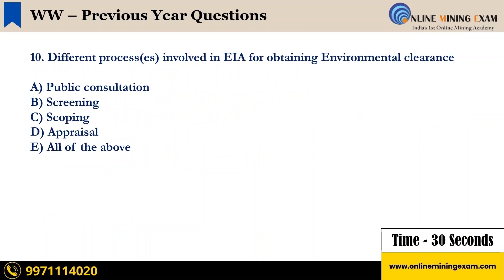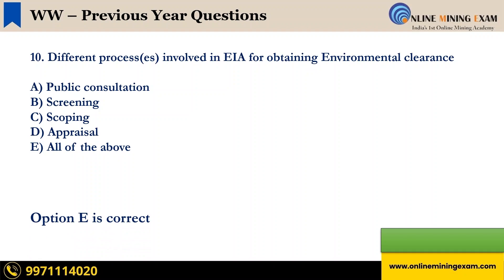Question 10: Different processes involved in EIA for obtaining environmental clearance: A — public consultation, B — screening, C — scoping, D — appraisal, E — all of the above. The correct answer is E — all of the above.